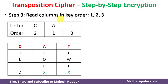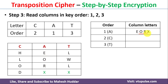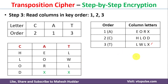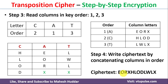Next, we need to read the columns in the key order. The first key order is A, which is numbered 1, so we read the second column. The second column letters are E-O-R-X. The next key letter is C, numbered 2, which is the first column, giving us H-L-O-D. Next is T, numbered 3, giving us L-W-L-X. We then concatenate all these to get the final cipher text: E-O-R-X-H-L-O-D-L-W-L-X.